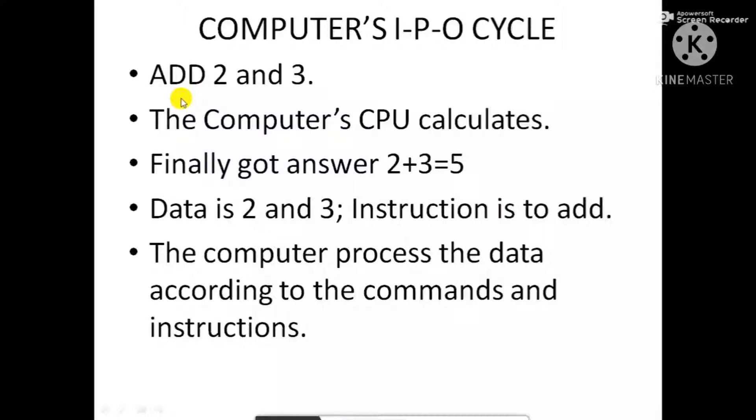So input given to the computer are data and instruction. The computer processes the data according to the command or instruction we give to it. And finally we got the answer or output 5. Computer also follows an IPO cycle.